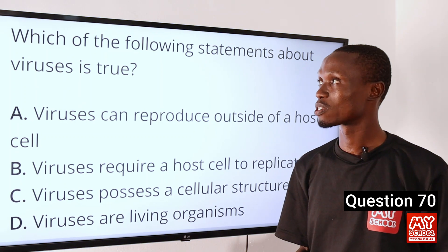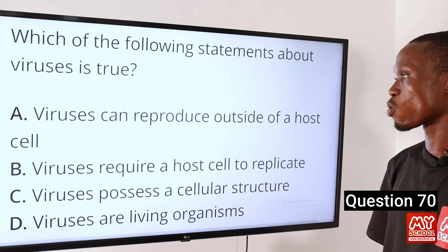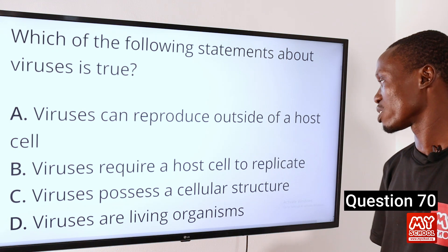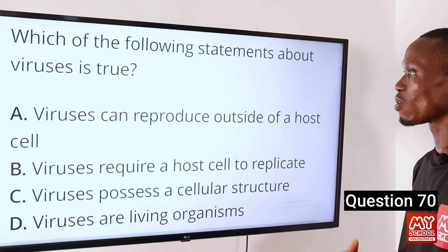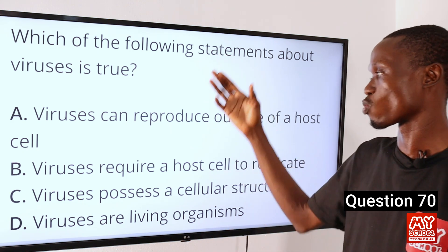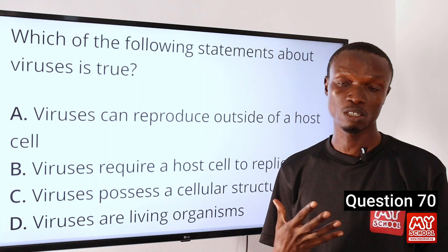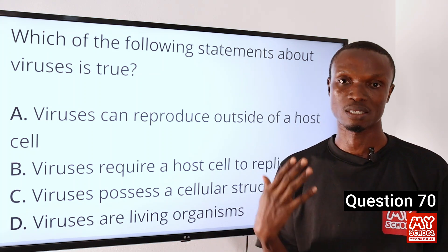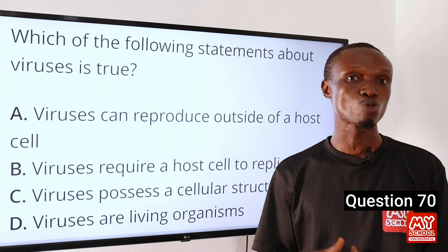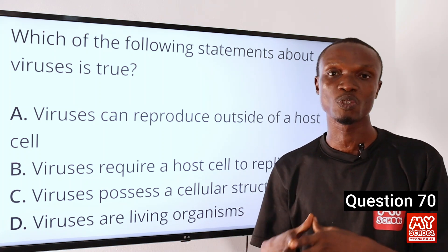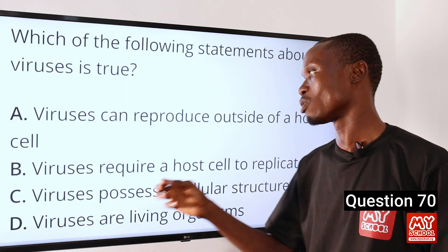Question 70: Which of the following statements about viruses is true? A: Viruses can reproduce outside of a host cell. B: Viruses require a host cell to replicate. C: Viruses possess a cellular structure. D: Viruses are living organisms. The best answer is option B — viruses require a host cell to replicate. Viruses are parasitic; when they want to replicate, they need a host cell. They do so by injecting their genetic material into the host cell and using the cell's mechanism to replicate. So option B is the correct option.